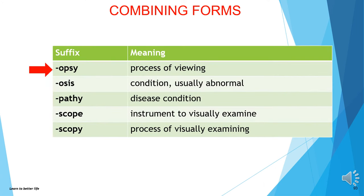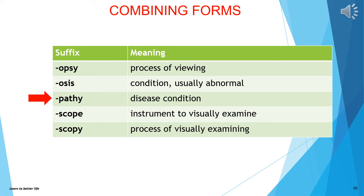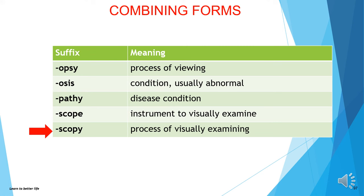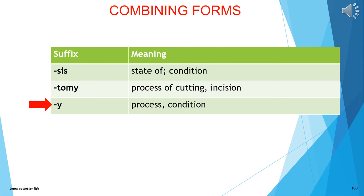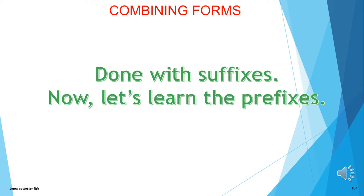About 20 more terms and you are done with suffixes. -opsy means process of viewing. -osis means condition, usually abnormal. -pathy means disease condition. -scope means instrument to visually examine. -scopy means process of visually examining. -sis means state of or condition. -tomy means process of cutting or incision. -y means process or condition. Done with suffixes.